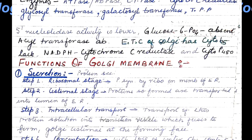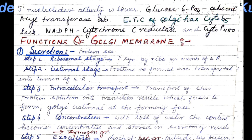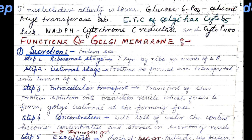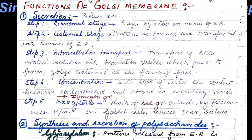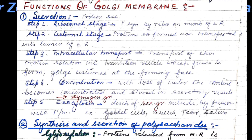The functions of Golgi membranes include secretion, which occurs in a phased manner. The steps involved are: first, the ribosomal stage; second, the cisternal stage; third, intracellular transport; fourth, concentration of the stored material; and finally, exocytosis.